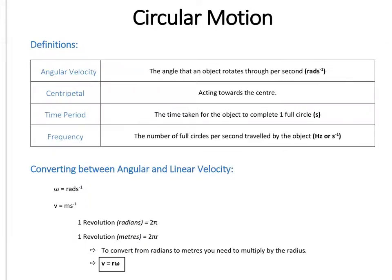We're going to introduce this new property called angular velocity. If you think about an object moving in a circle, angular velocity is the number of radians, or the angle, that an object rotates through every second. The SI unit is radians per second — it's possible you're given it in degrees per second and need to convert, but the SI unit is radians per second.